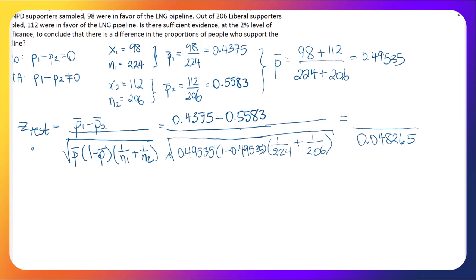On the top, we're just going to get the difference between these two values. That gives us negative 0.1208. When we divide those two together, we end up with negative 2.5019.